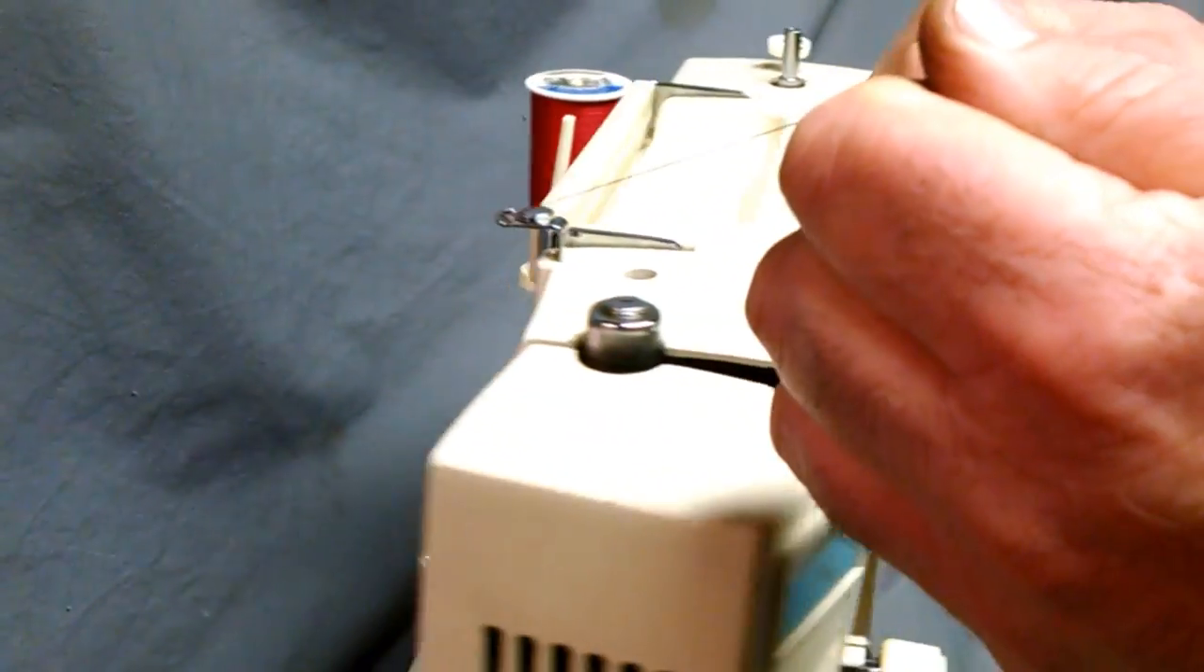So as you come through, you just wrap it around this way. You go one loop and now you're through the loop. Then the next one is coming forward. Same thing, you pull up under, wrap around once, and then you're through.